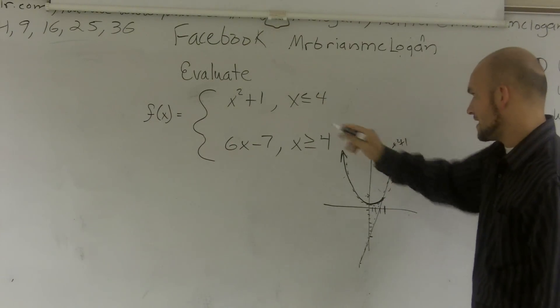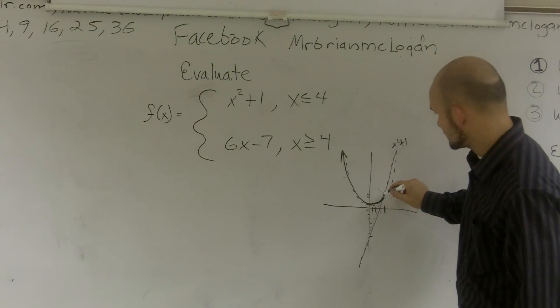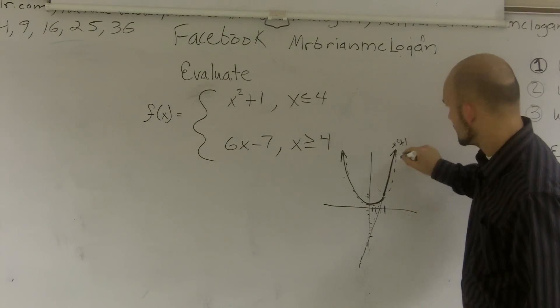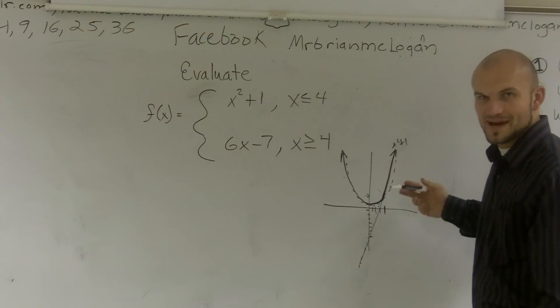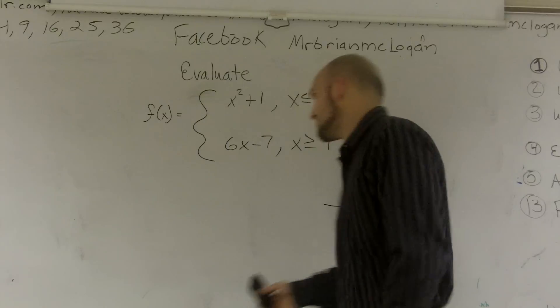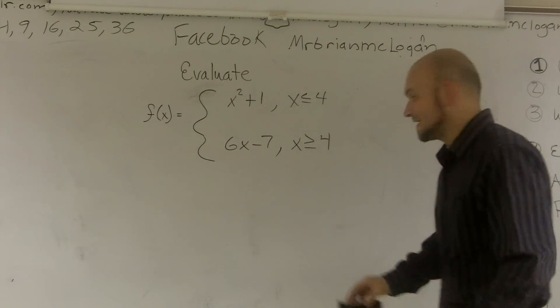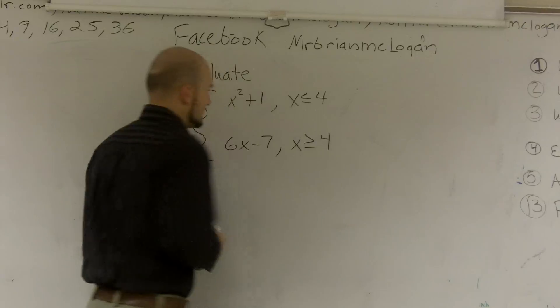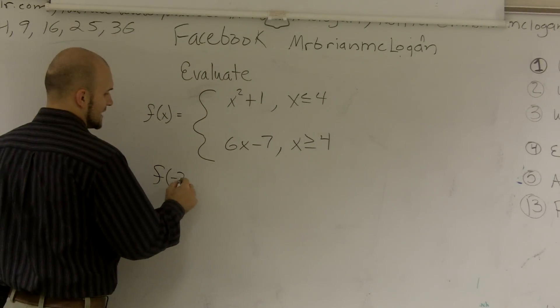And then once it's greater than 4, this graph takes over. It kind of looks like it's not really on the path, but it's kind of very similar to each other, at least the way that I drew it. So I don't know if that makes any sense, but let's see how we're going to evaluate algebraically. So let's say I wanted to evaluate f of negative 3.